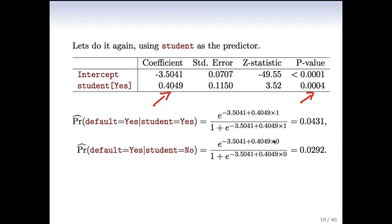And just like before, we can evaluate the probability of default is yes. Given that the card holder is a student, it comes out to 0.04. And if they're not a student, it comes out to be a bit lower, 0.029, close to 0.03. And we're going to examine the interactions between student and balance and the other variables in a little while.